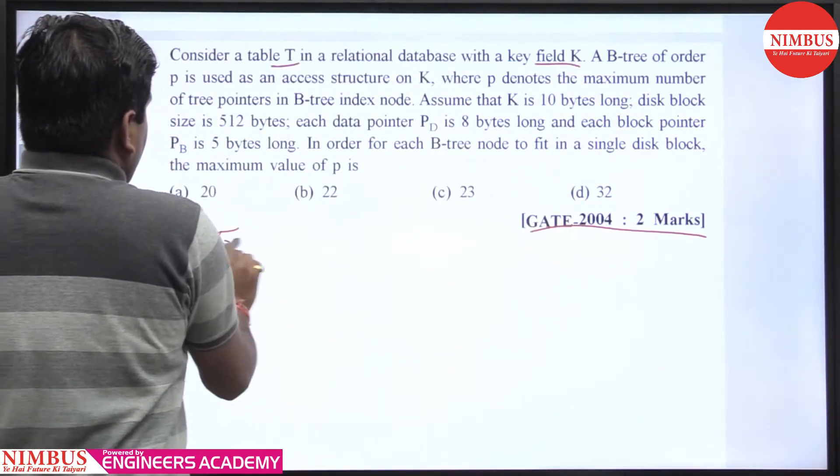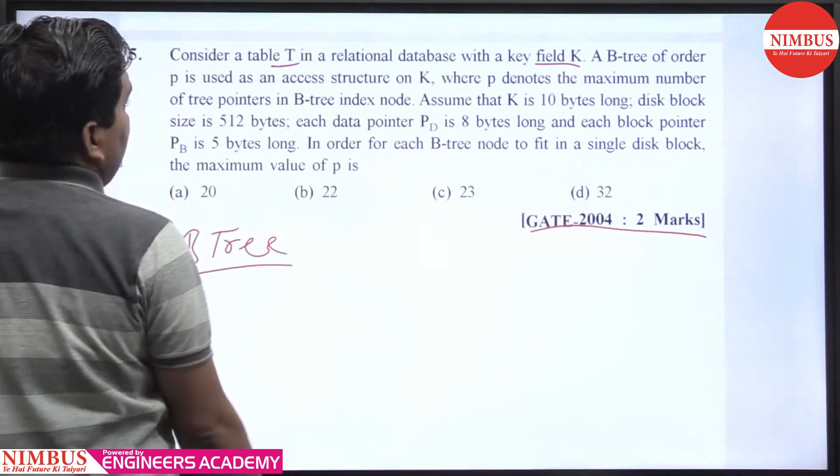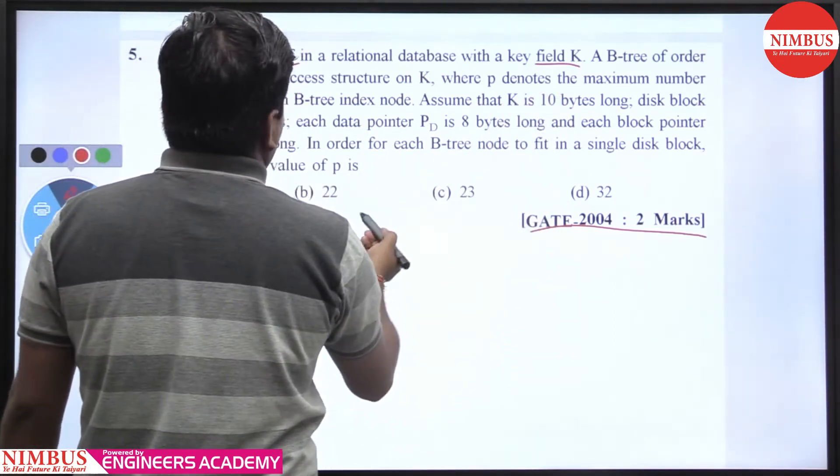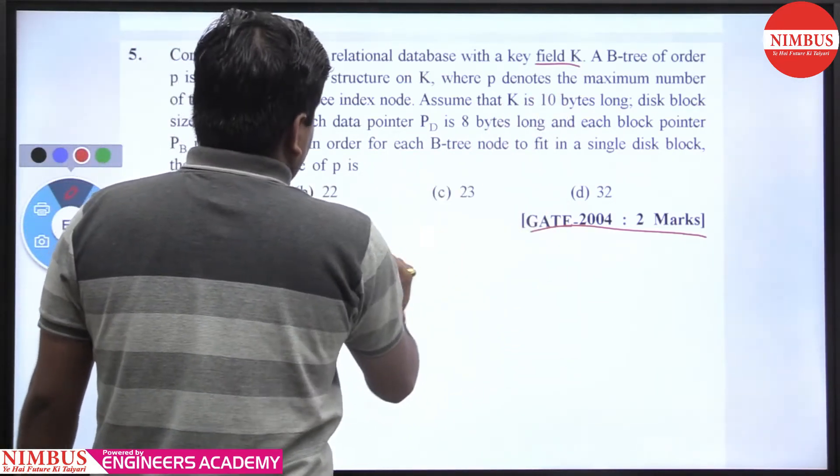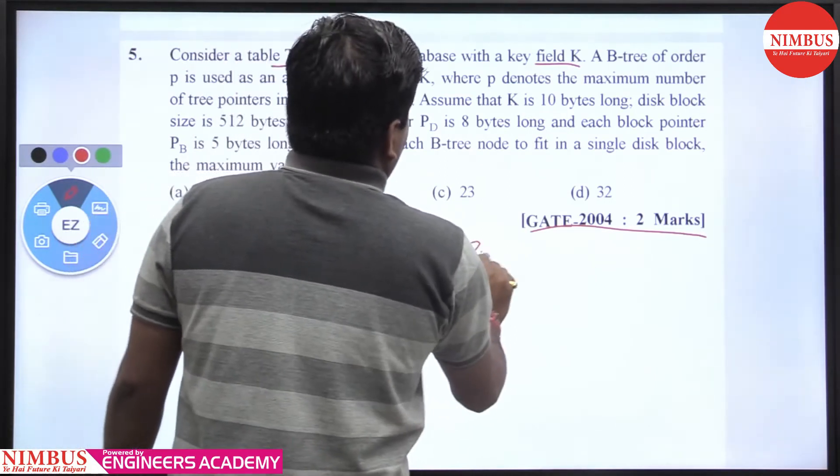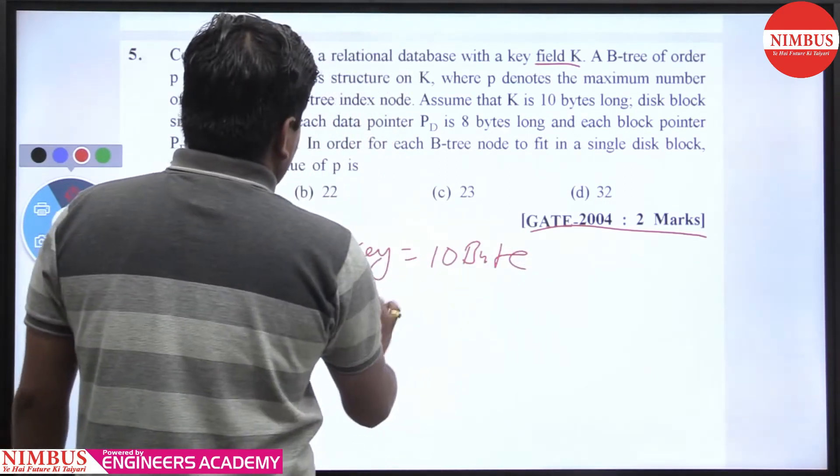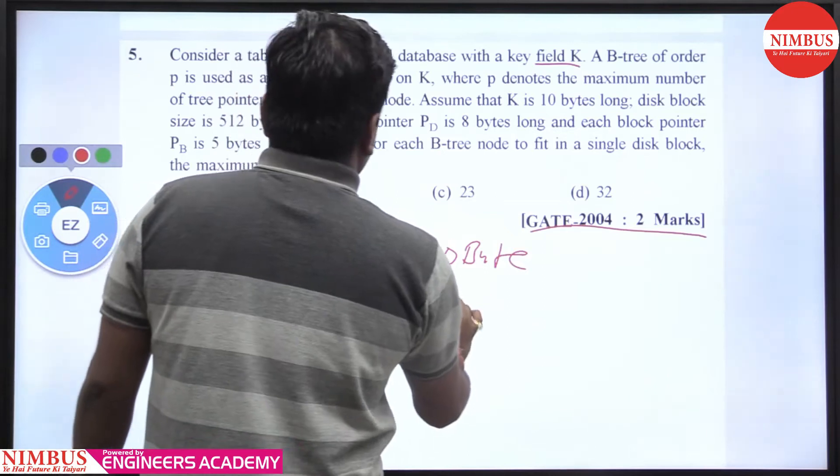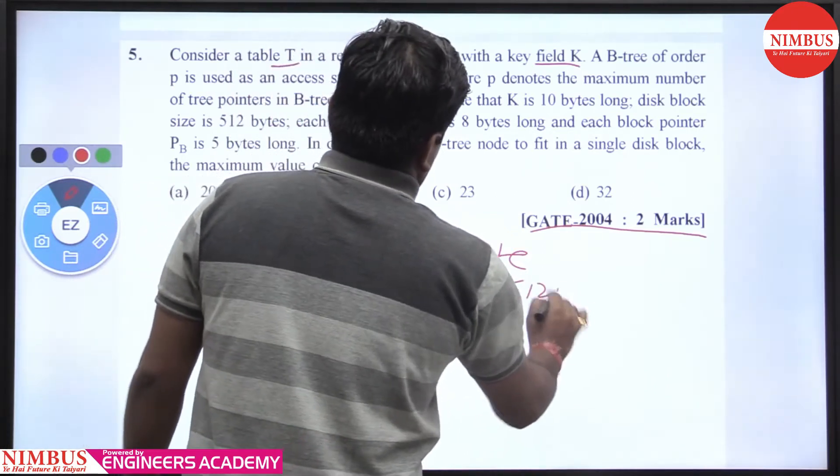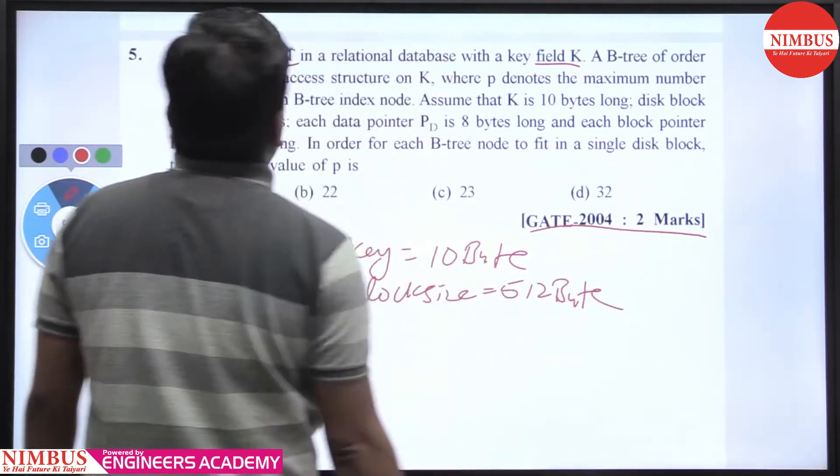This question is about the B-tree access where P denotes the maximum number of tree pointers in a block. Pointer and key size is 10 bytes, disk block size is 512 bytes.